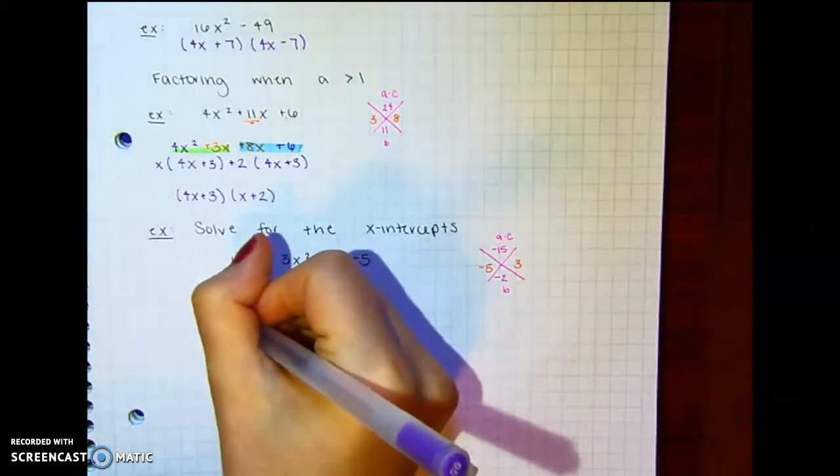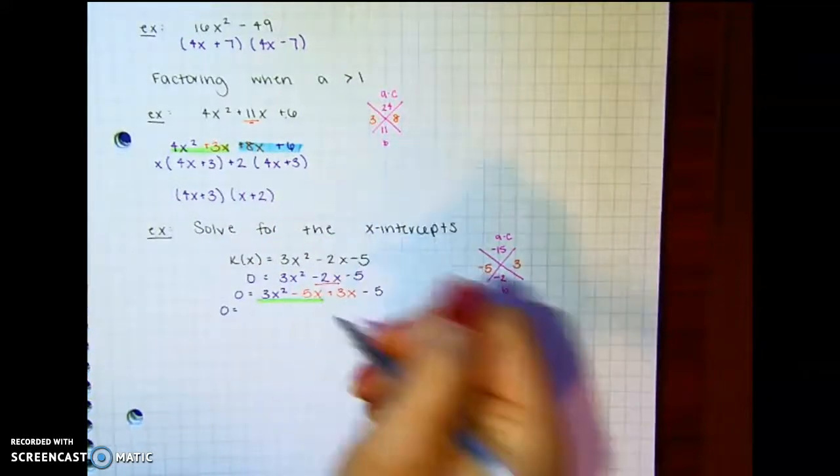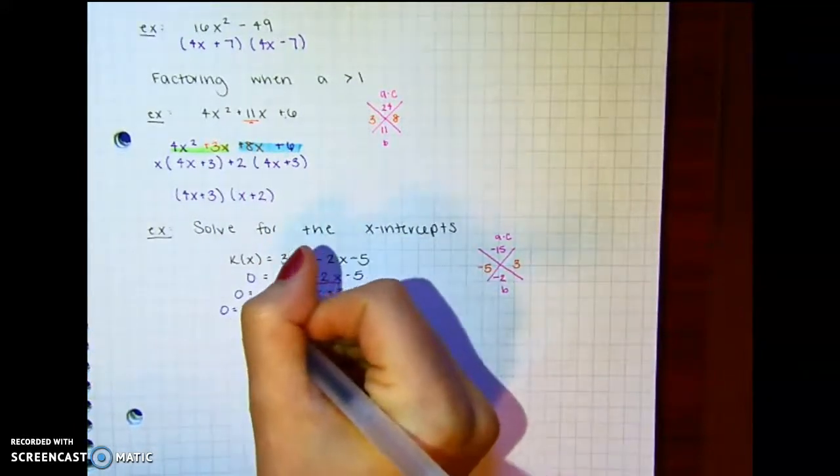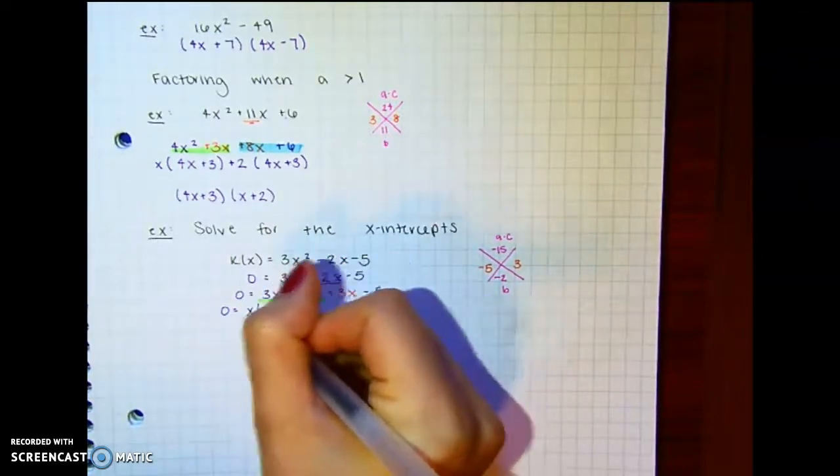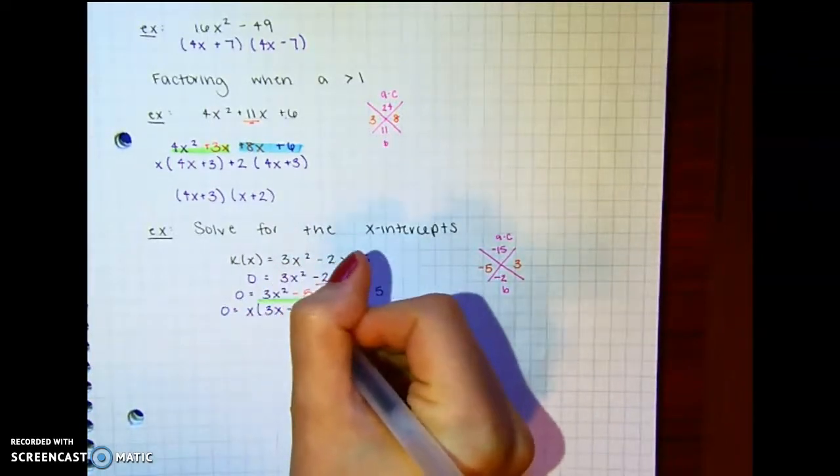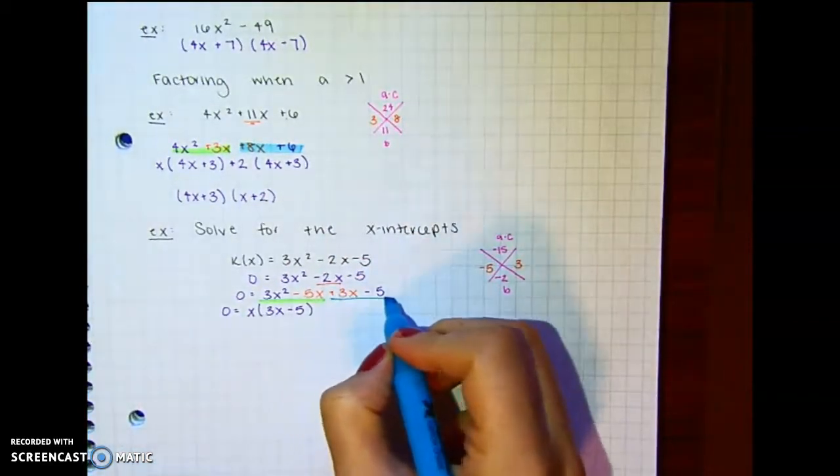So first group is 3x squared minus 5x. And the greatest common factor. So again, we still bring down that 0 and the equal sign. Greatest common factor is just x. 3x squared divided by x is 3x. Negative 5x divided by x is negative 5. Then we look at our second group.